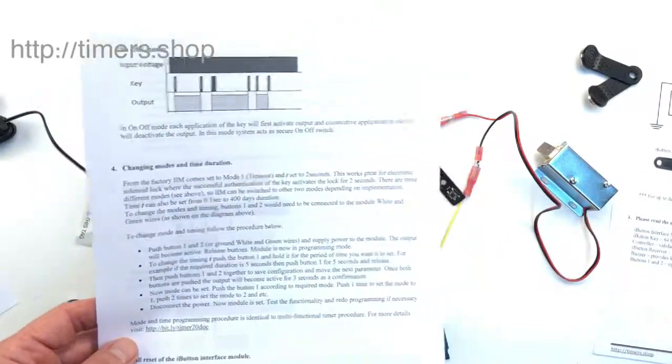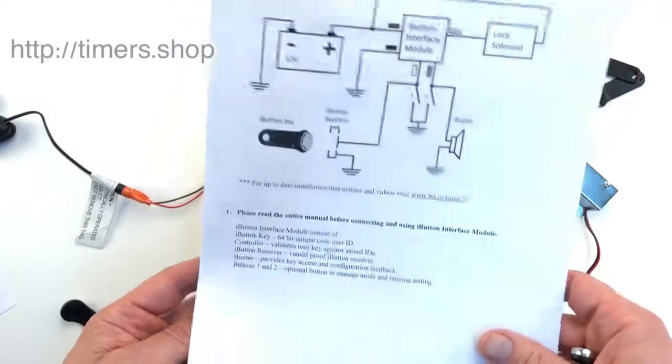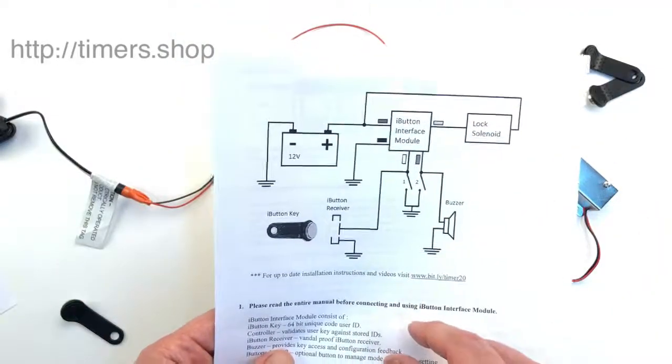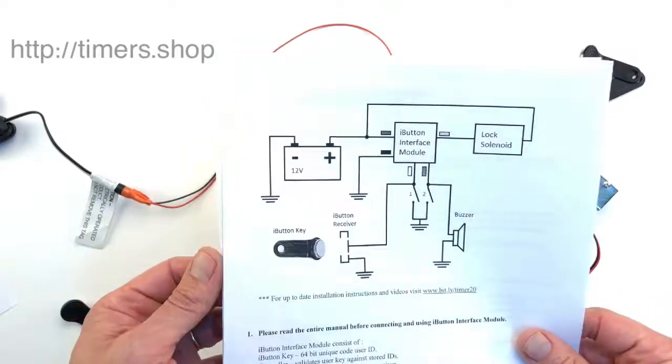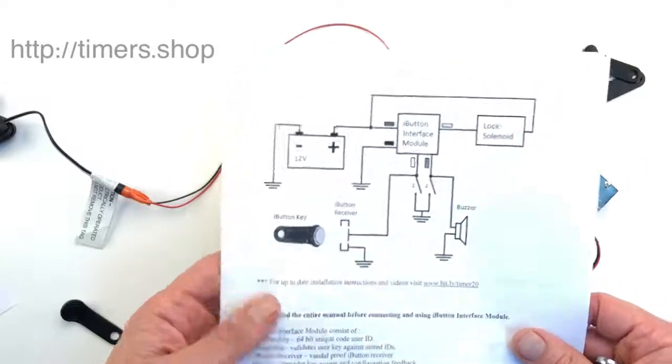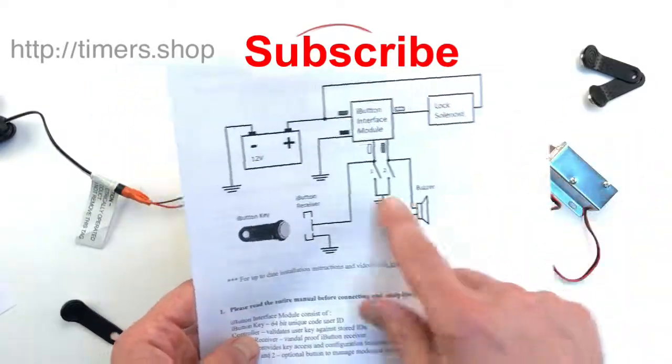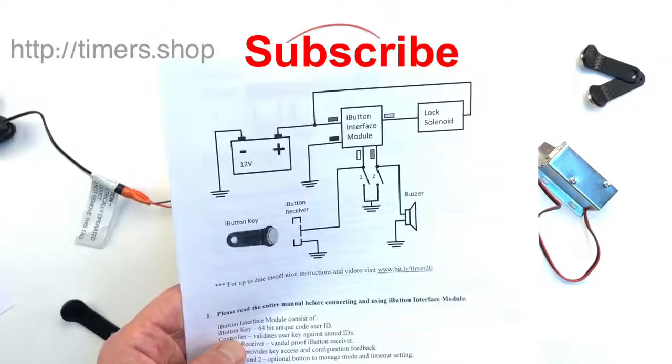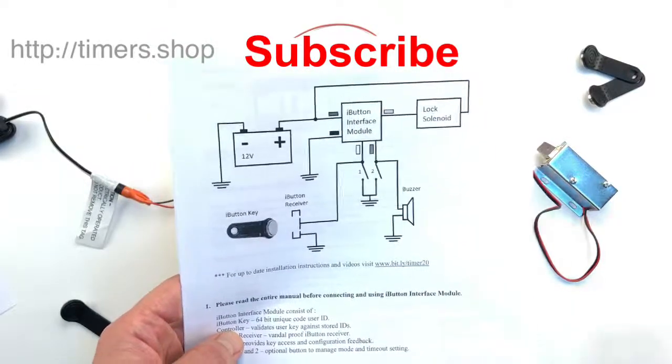So here it is—very simple to connect. The buttons one and two are only used to change the modes and change the timing. So if you don't need to change the timing, if you just want to create a lock, you don't even need to connect the buttons. So here it is, thank you so much.